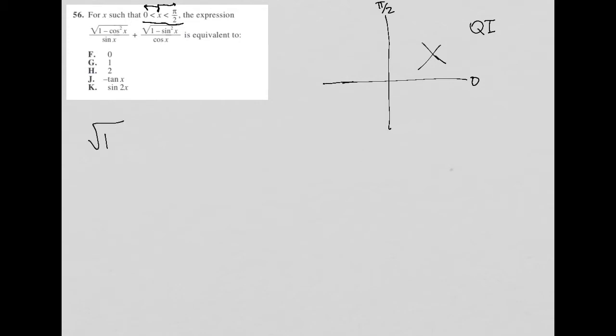and I'll just write this down, the square root of 1 minus cos squared x over sin x plus the square root of 1 minus sin squared x over cos x is equivalent to, which just means equals, right? Equals what?